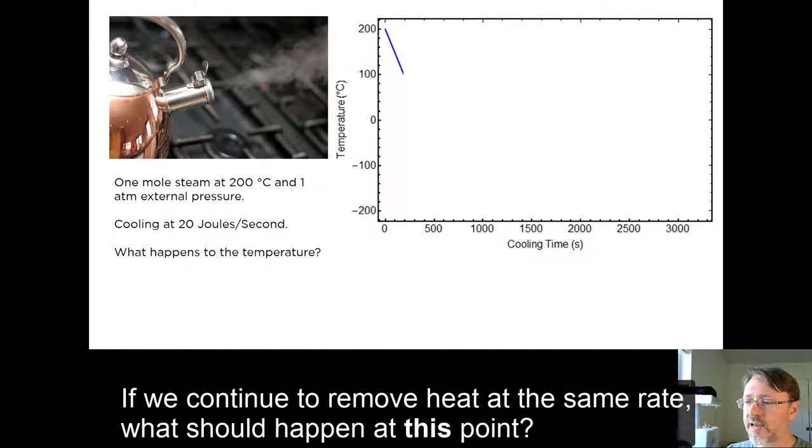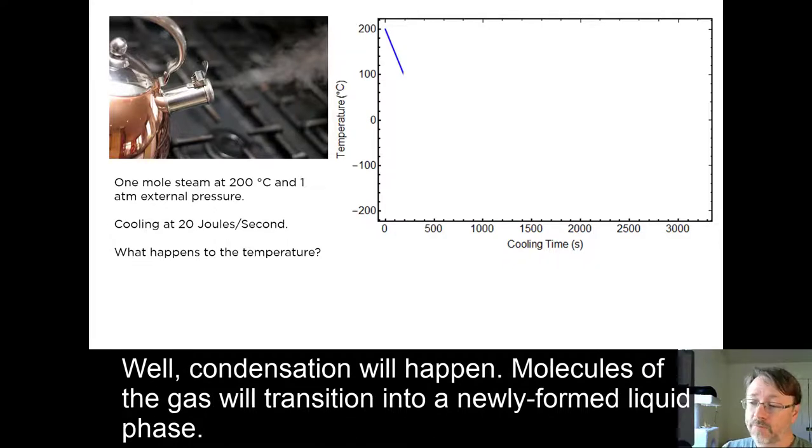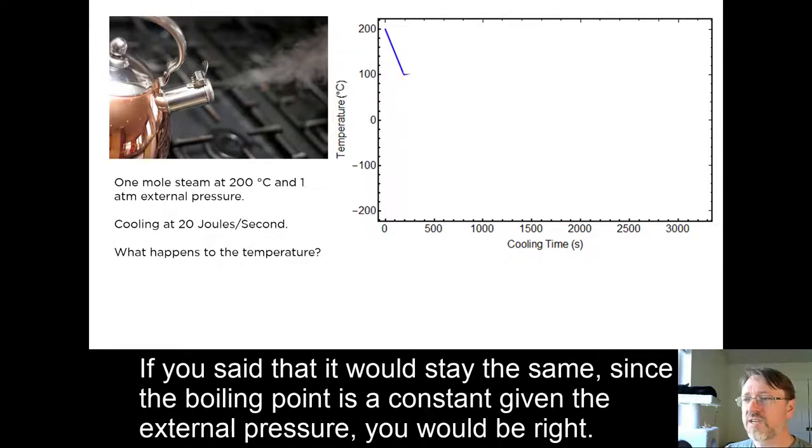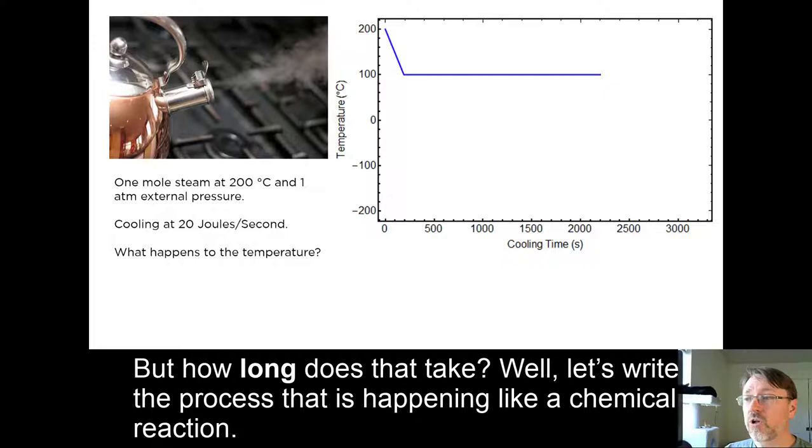If we continue to remove heat at the same rate, what should happen at this point? Well, condensation will happen. Molecules of the gas will transition into a newly formed liquid phase. But what happens to the temperature while this process is going on? If you said that it would stay the same since the boiling point is a constant, given the external pressure, you'd be right.